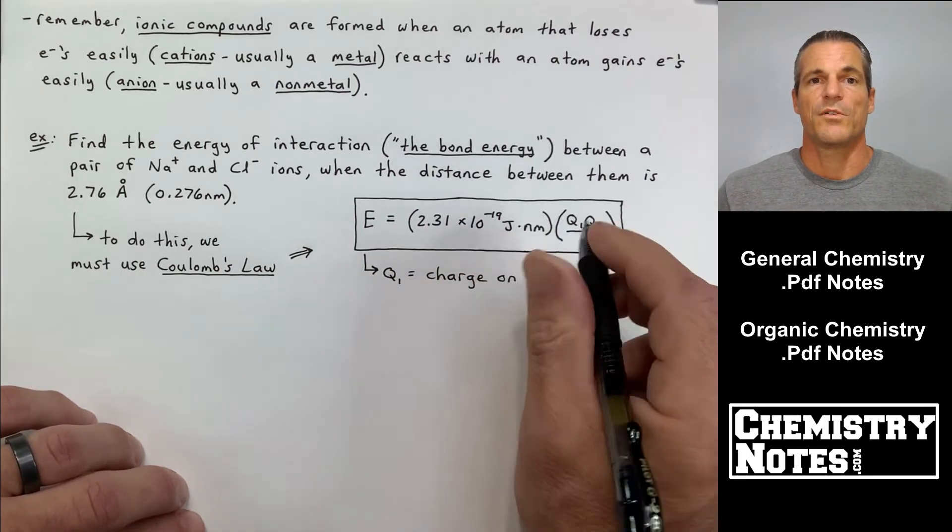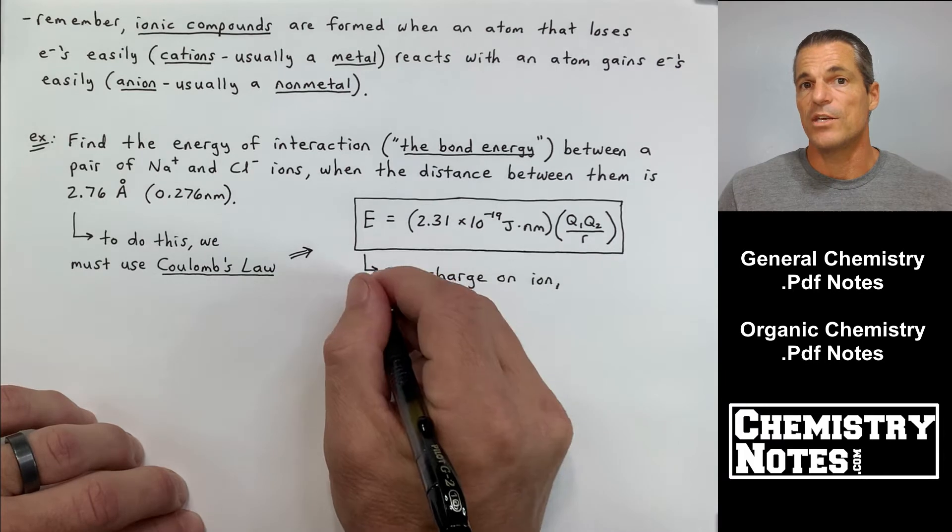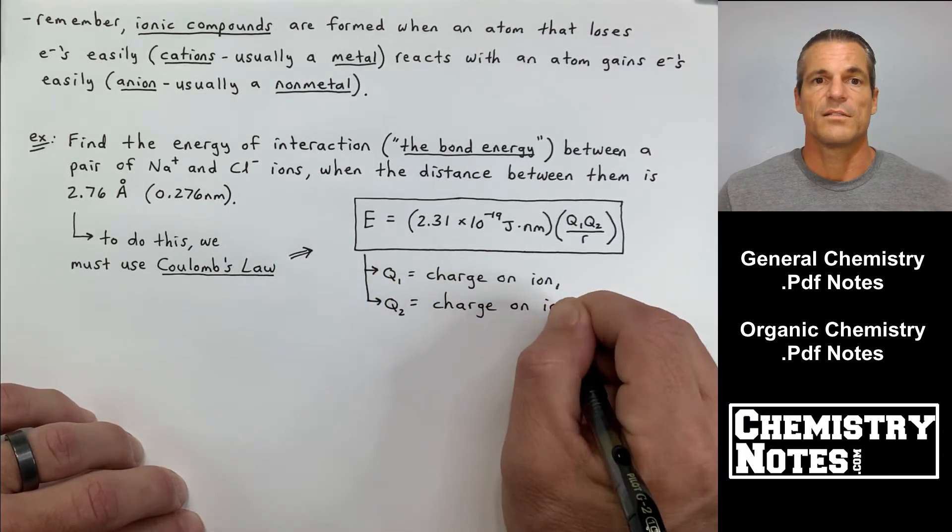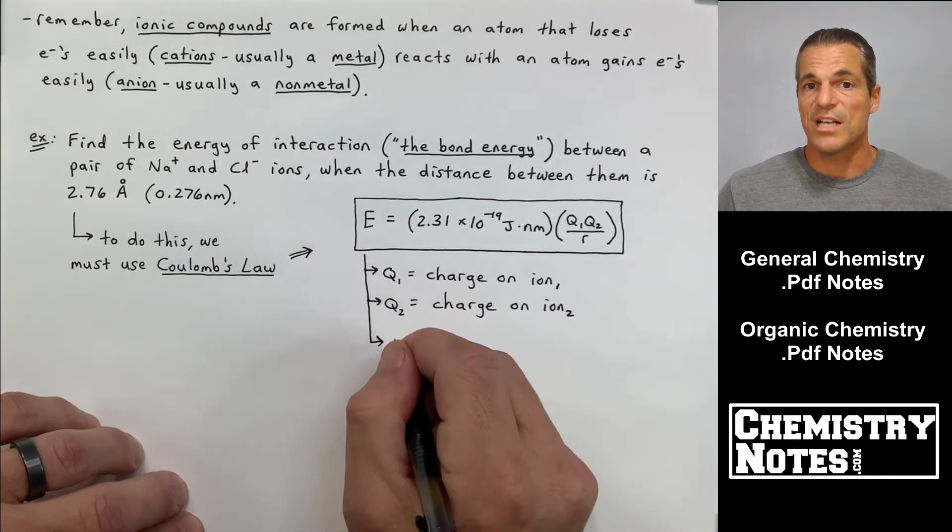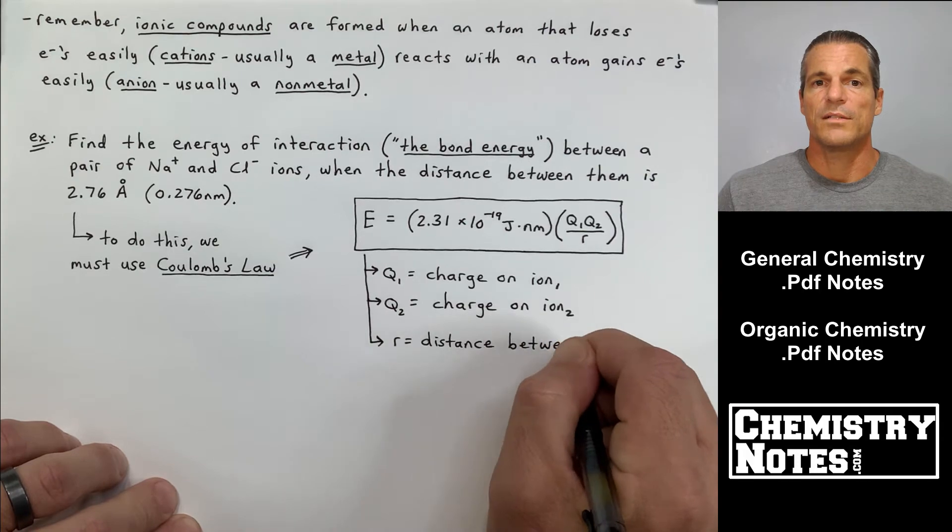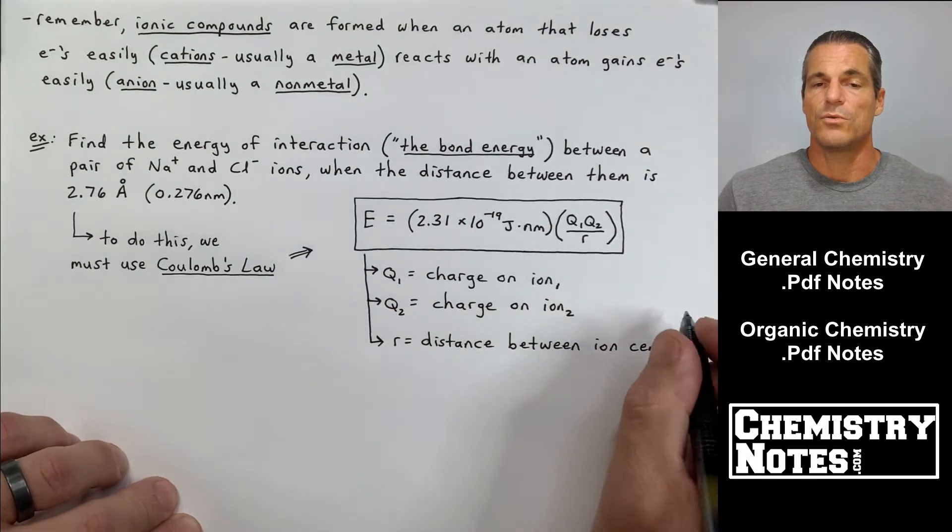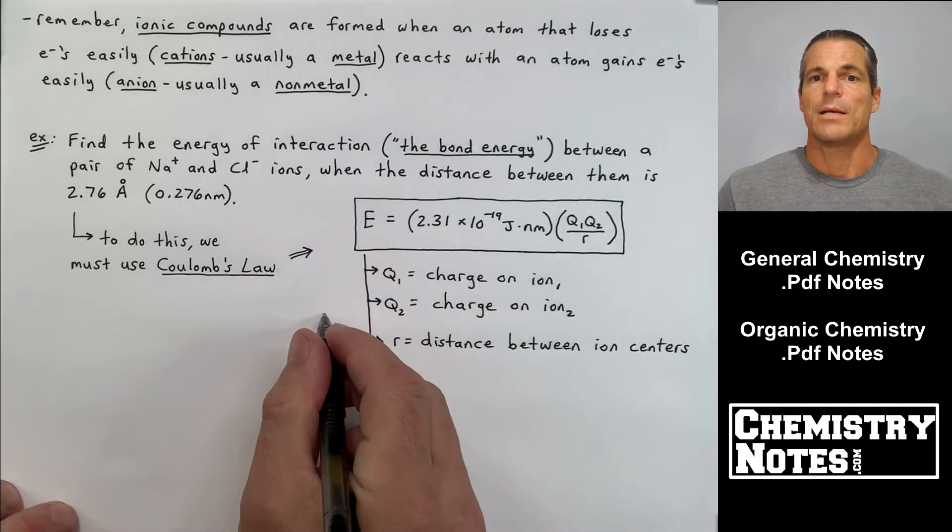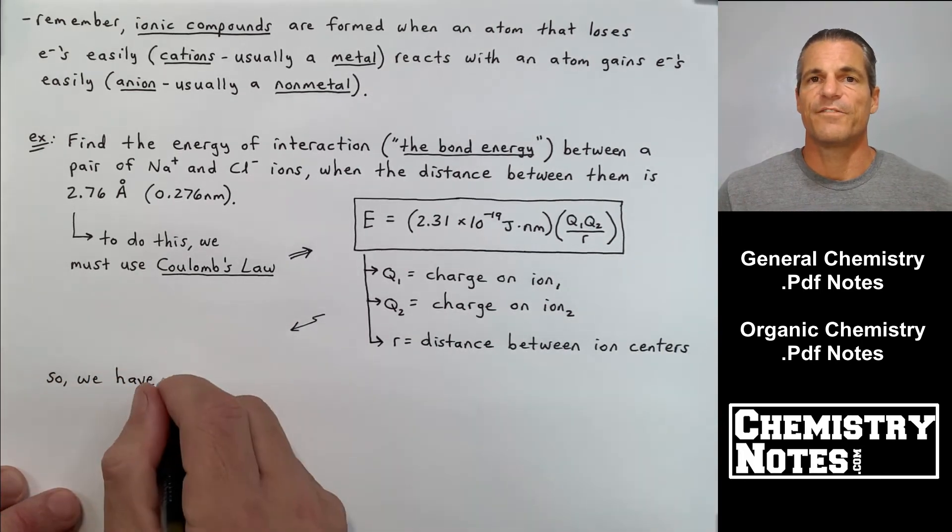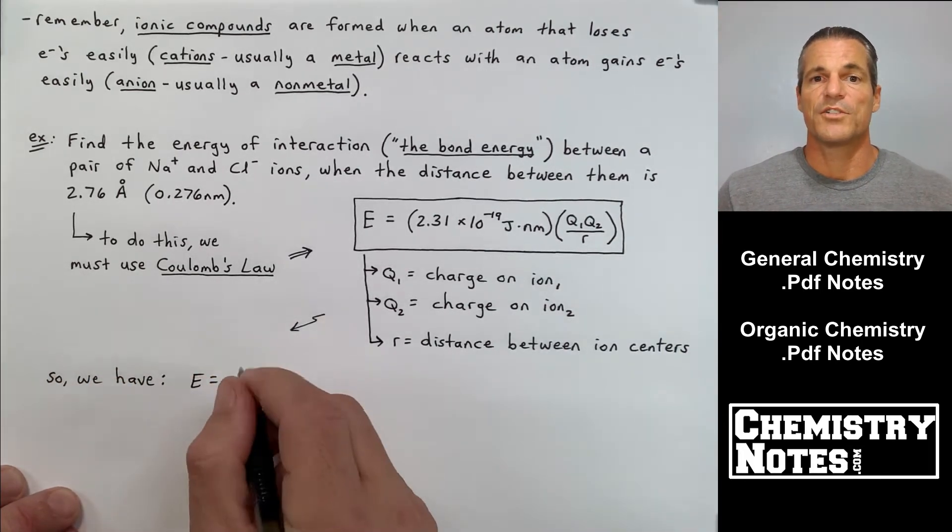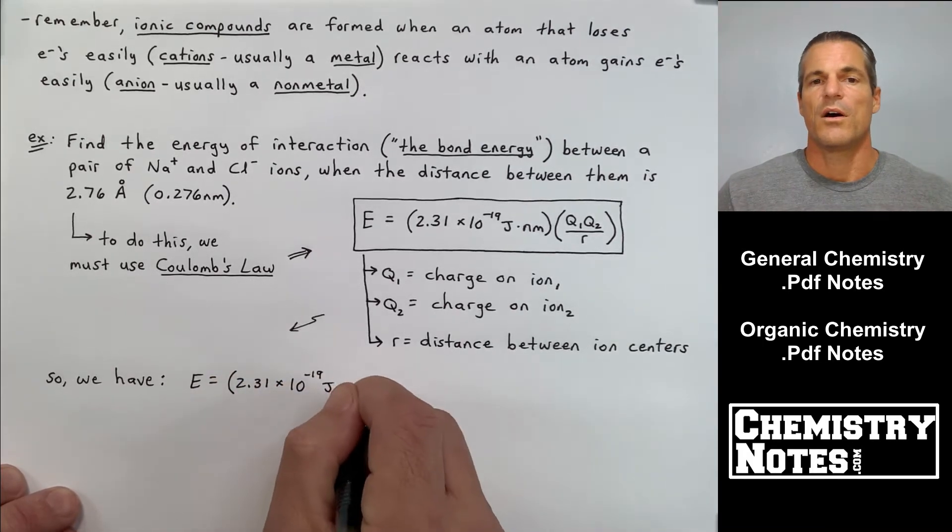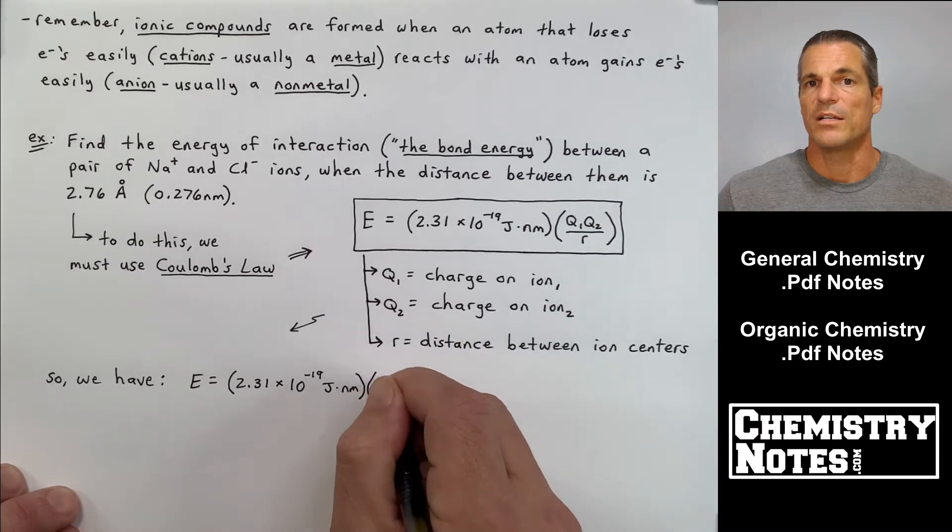If you've had an introductory physics class, you've probably heard of Coulomb's law: E = kQQ/r. This is the same Coulomb's law. I've inserted the constant here, so the energy equals 2.31 × 10^-19 joules·nanometers times Q1·Q2 over r. Q1 is the charge on ion 1, Q2 is the charge on ion 2, and r is the distance between the two ion centers.